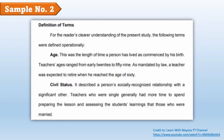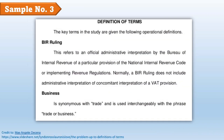Here is another sample. This time the introductory line is: 'For the reader's clearer understanding of the present study, the following terms were defined operationally.' So here it is very clear that the researcher used operational definition only to define the terms such as age and civil status. For the last example, the introductory line is: 'The key terms in the study are given the following operational definitions.' The words defined are BIR ruling and business.